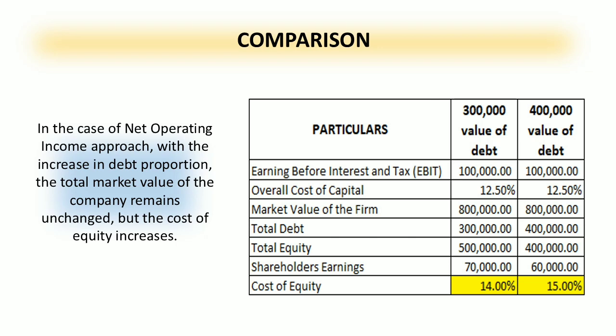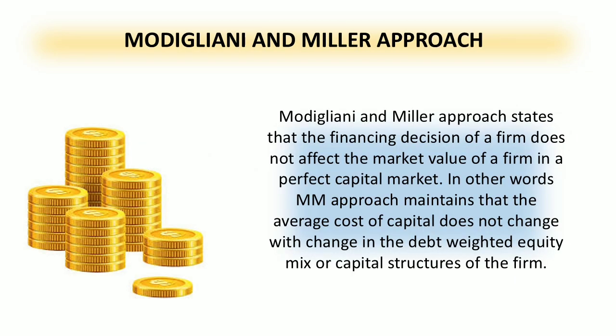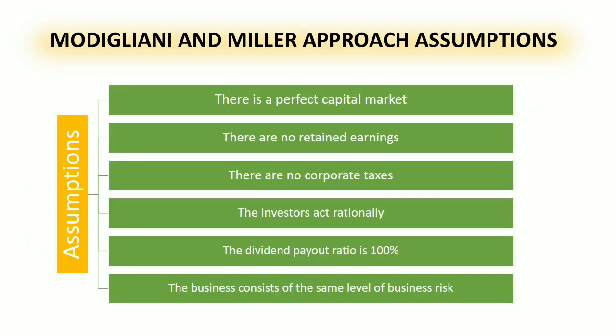Now let's move to the Modigliani-Miller Approach. The M&M Theorem was developed by economists Franco Modigliani and Merton Miller in 1958. The main idea is that the capital structure of a company does not affect its overall value — the financing decision of a firm does not affect the market value of a firm in a perfect capital market. The average cost of capital does not change with change in the debt-weighted equity mix or capital structure of the firm. This approach is divided into two propositions: the M&M Theorem on the perfect capital market, and the M&M Theorem in the real world.